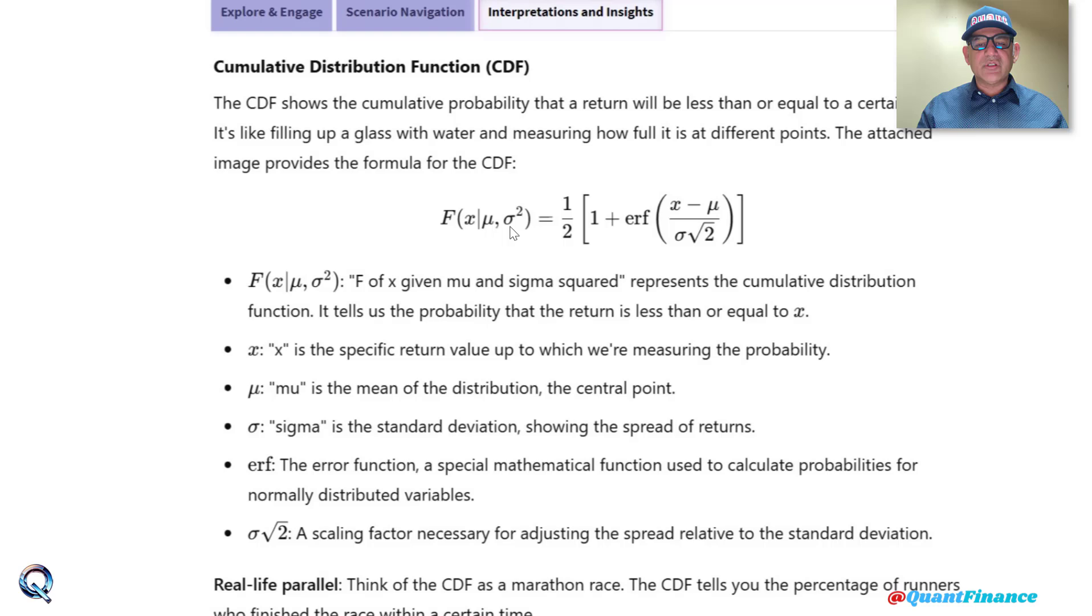Sigma is standard deviation, but here we have used sigma squared so it is variance. This interesting erf is error function, a special mathematical function used to calculate the probabilities for normal distribution variables.